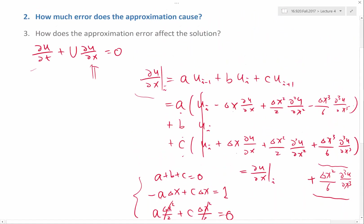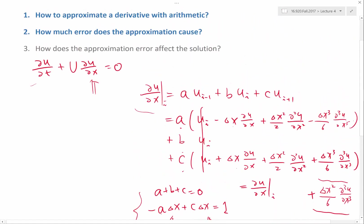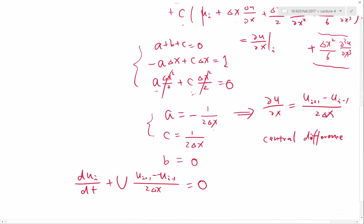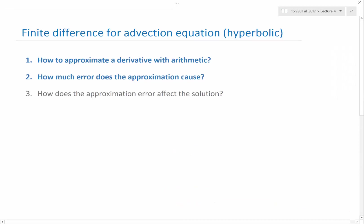All right, so now we answered the first two questions. We want to answer now how does the approximation error affect the solution. So again, we need to answer the question of stability. We want to see, does this equation exponentially amplify or exponentially decay any error added? To do that, we use the Neumann Stability Analysis again.